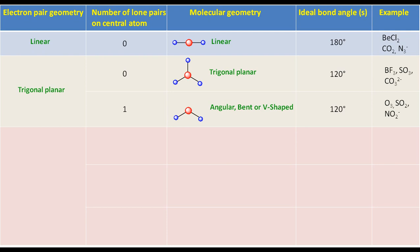If the electron pair geometry is tetrahedral and the number of lone pairs on the central atom is zero, then the molecular geometry will be tetrahedral. The ideal bond angle will be 109.5 degrees. CH4, NH4+, and PO4 3- are examples of this type of molecule.